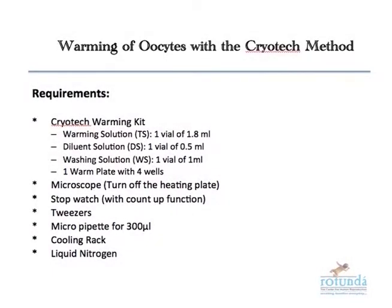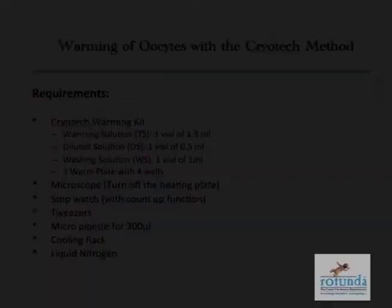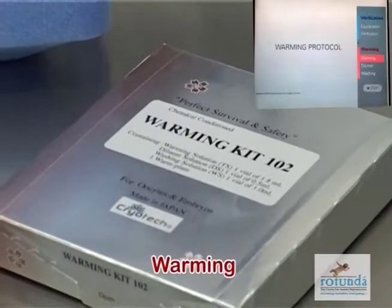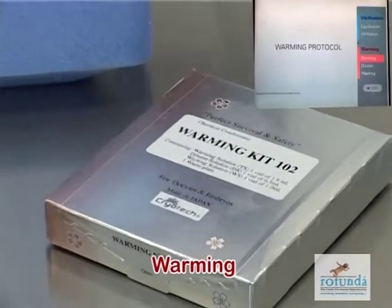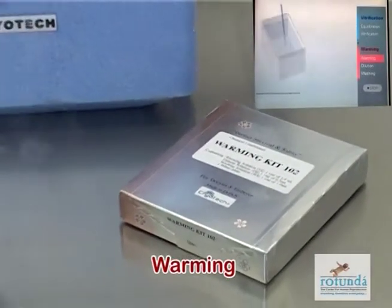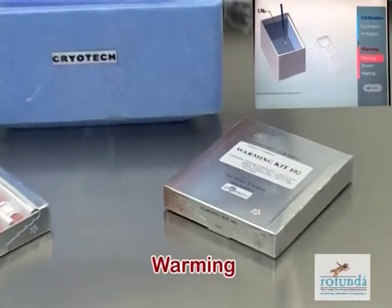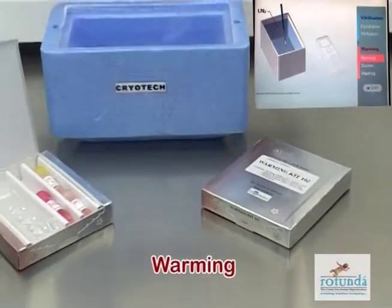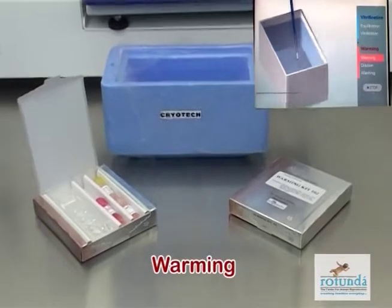The warming process. Before beginning the process, ensure that the microscope stage heating is turned off. Use a pipette with the right suitable internal diameter to optimize the dilution of the solutions to achieve a high survival rate after warming. Place the warm plate and TS vial with cap in the incubator at 37 degrees at least 4 hours before warming; overnight storage is recommended. Bring DS and WS vials to room temperature of 25 to 27 degrees centigrade at least 1 hour before warming.